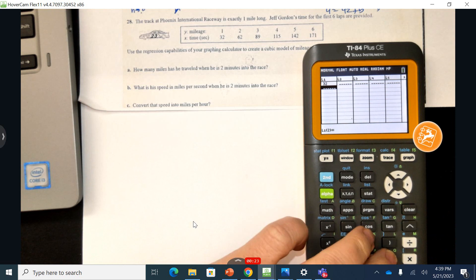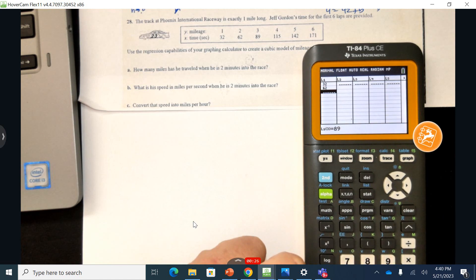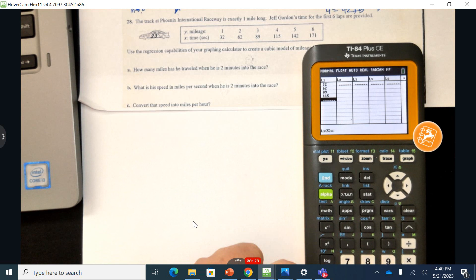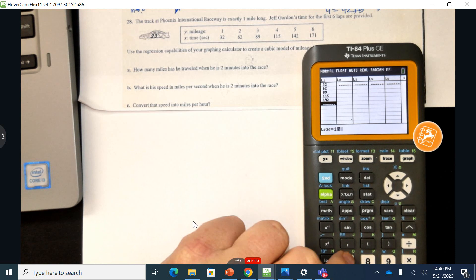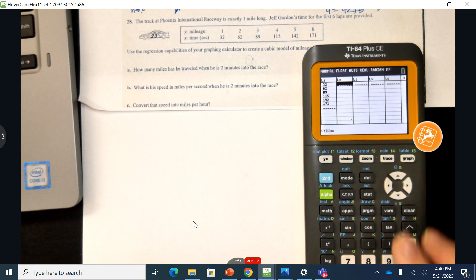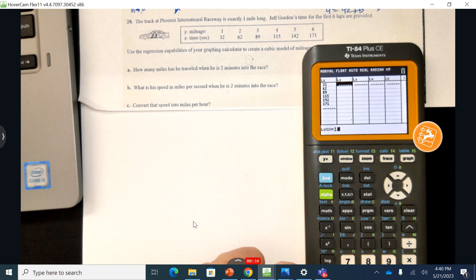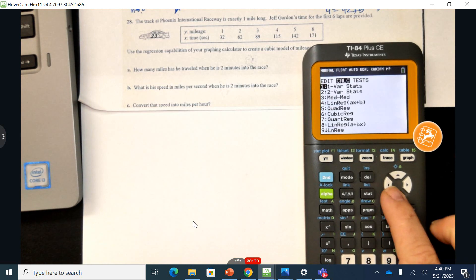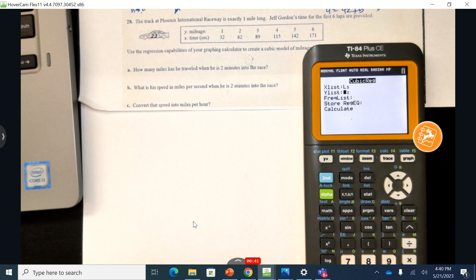First thing I'm going to do is go to stats and edit and type in the given information. So we have 32, 62, 89, making sure everything is correctly placed into the calculator. Now I'm going to go back and put in 1 through 6. I'm going to stats and calculate and it says to calculate the cubic regression model.